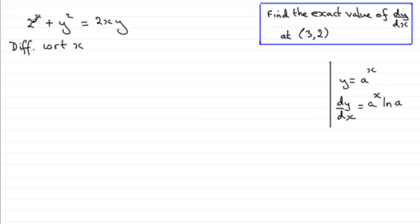So when it comes to differentiating 2 to the power of x, the a value is that 2. So you're going to have 2 to the power of x multiplied by the natural log of 2.